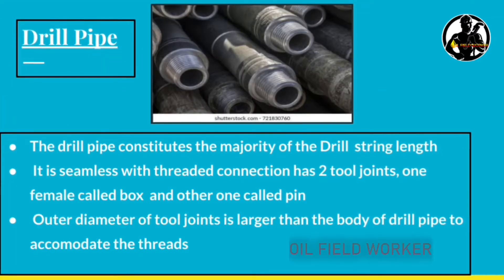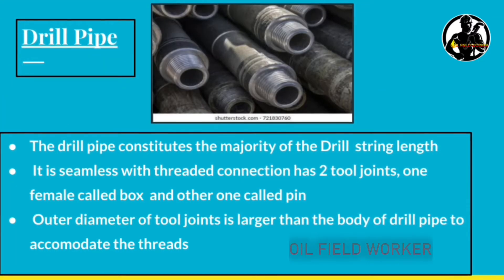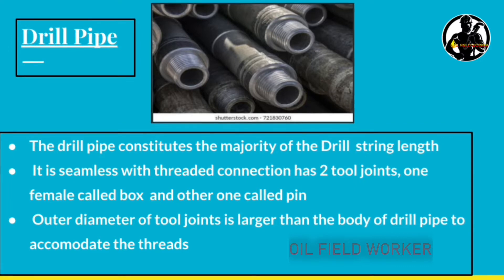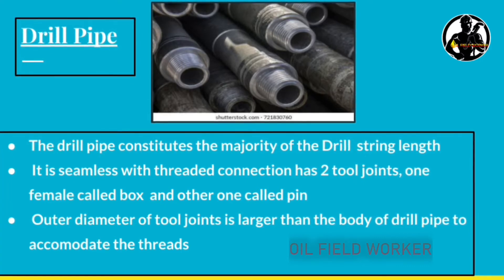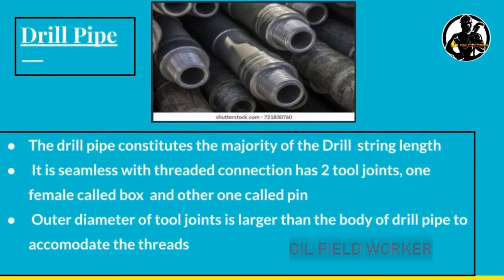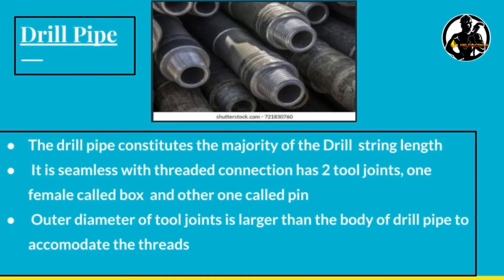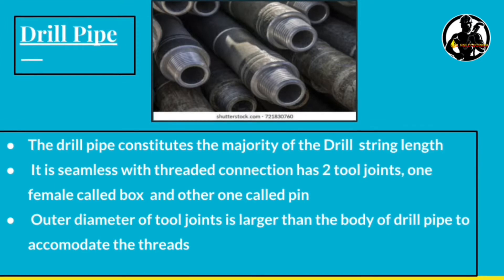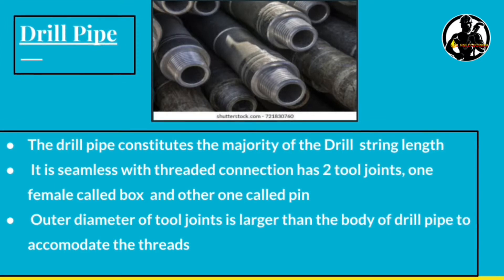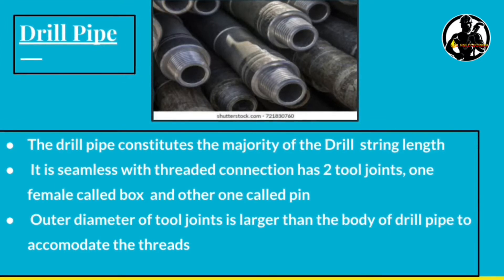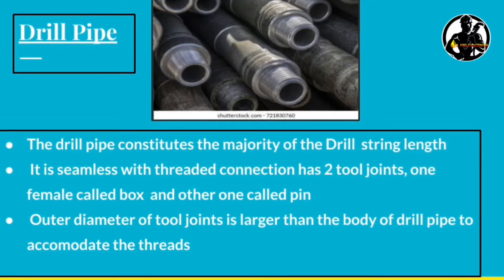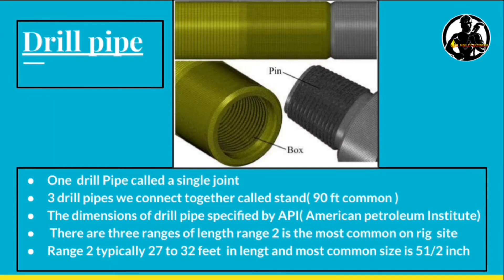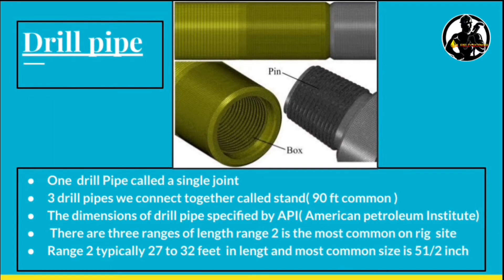The drill pipe makes up the majority of the string length. It has a threaded connection with two tool joints — one is female, called the box, and the other is male, called the pin. The outer diameter of the tool joint is greater than the body of the drill pipe. One drill pipe is called a single joint.